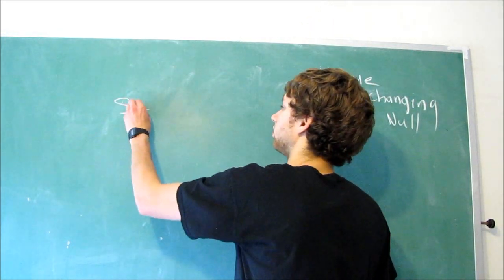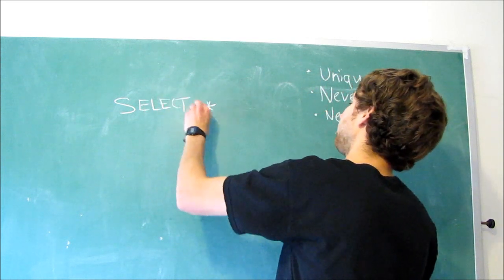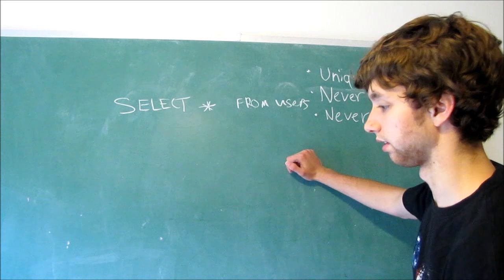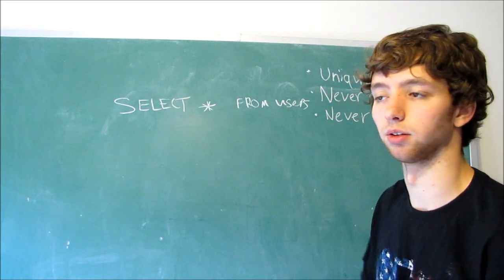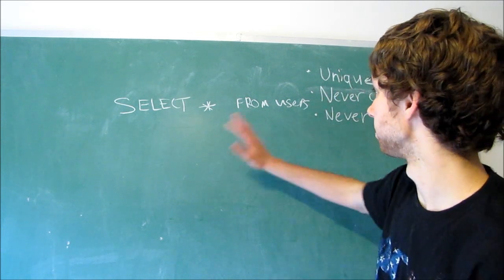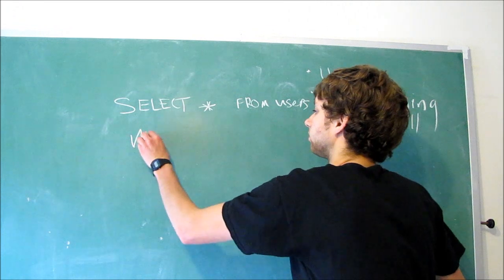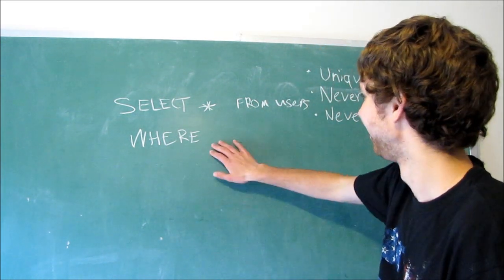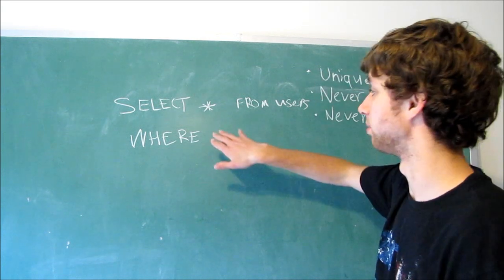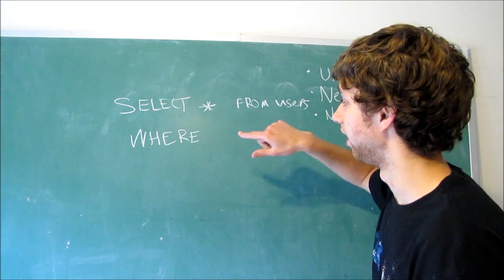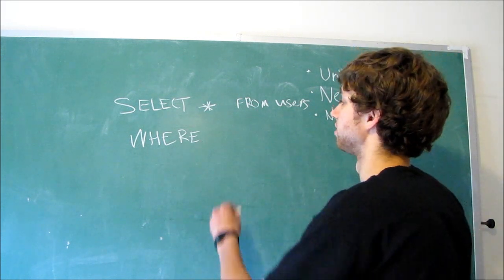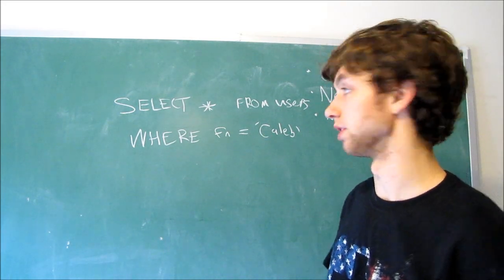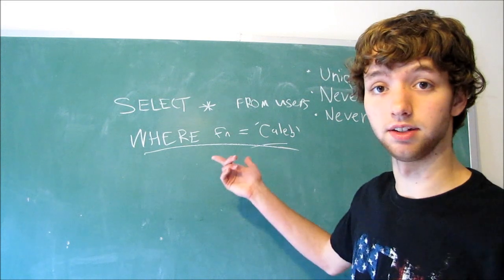So I could do something like select everything from users, for example. It's just like a SQL example. I mean, it'll vary from whatever programming, like relational database management system you use. This is a general example. And then I could say, where, now this is where I specify. I'm selecting all of the columns, and then I want to select every column where first name has the value Caleb, for example. Well, that's how we would do this. This right here, this whole where thing, well, it's best to have an index for that.